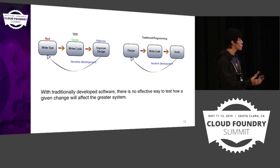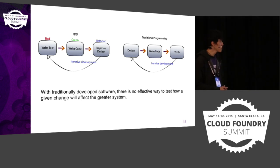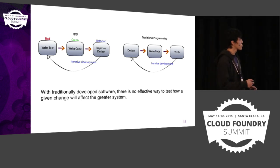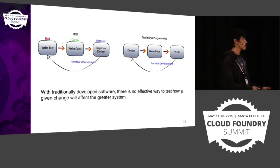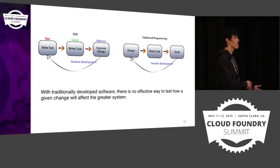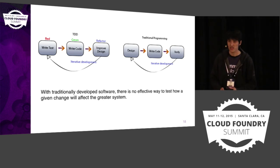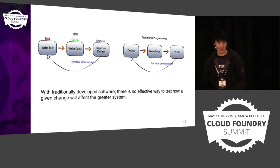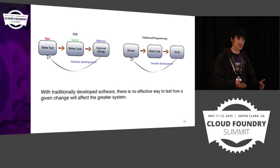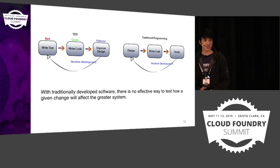One of the biggest drawbacks of traditional programming is there's no good way to tell whether your changes might have a negative impact on the system. Does it introduce regression? Does it adversely impact the system as a whole? You don't know that because there's no test to tell you.